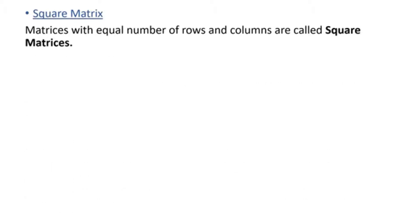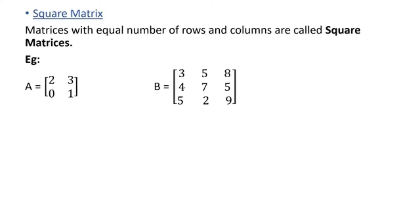The next type of matrix is the square matrix. Just like the name suggests, the number of rows and columns are equal in a square matrix. If you take matrix A, it has two rows and two columns, and matrix B has three rows and three columns, so the orders are two by two and three by three respectively.